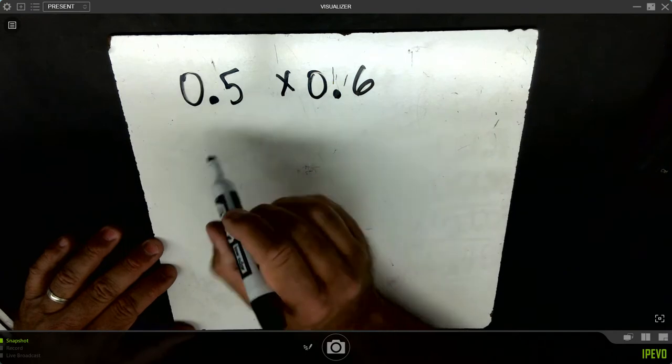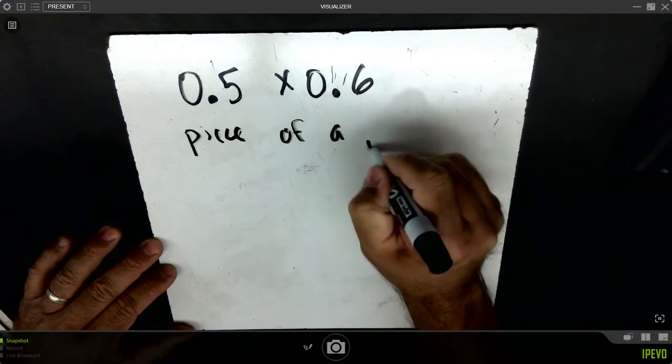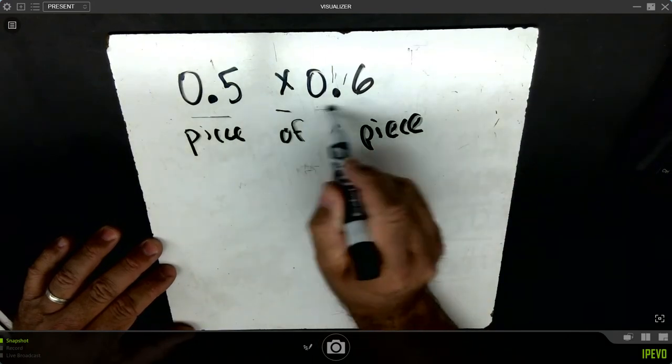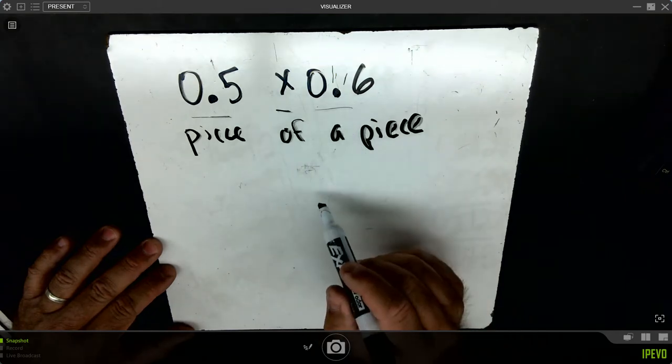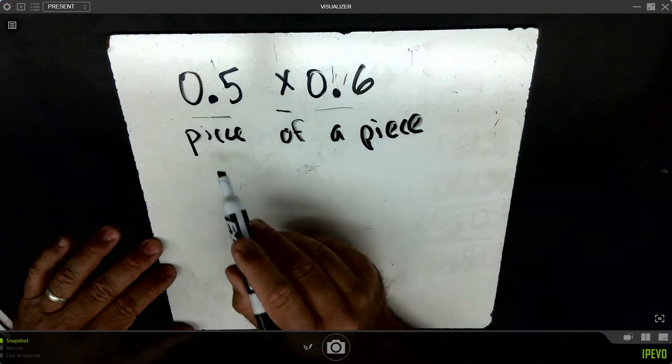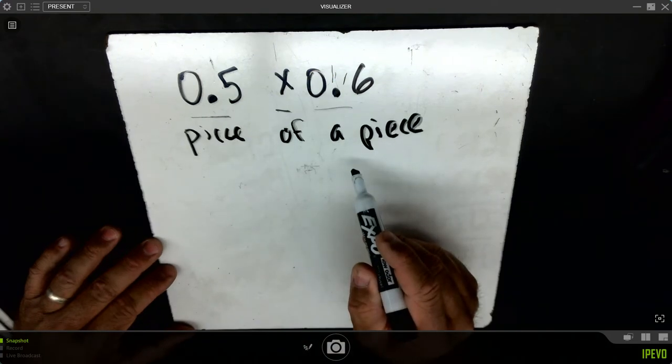We have a piece of a piece. We want five tenths of six tenths, which means we don't want all of six tenths, we want a part of it. Our answer is going to get smaller, and that seems strange when you multiply. But if you think about taking a piece of a piece, it makes sense that an answer would get smaller.